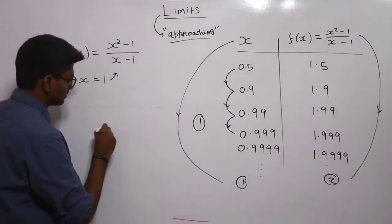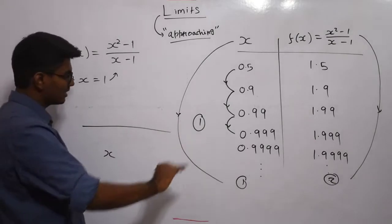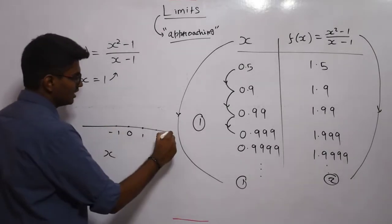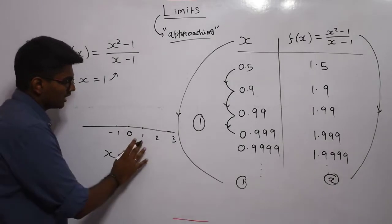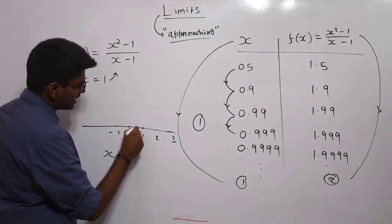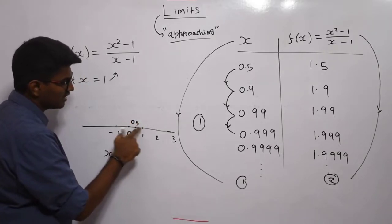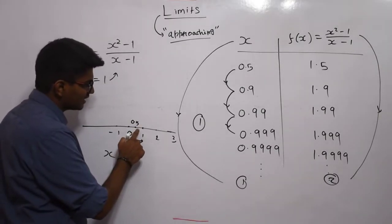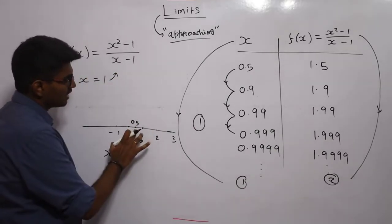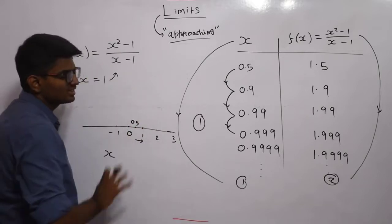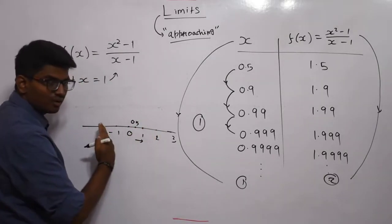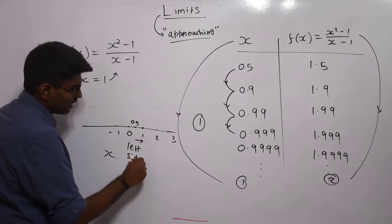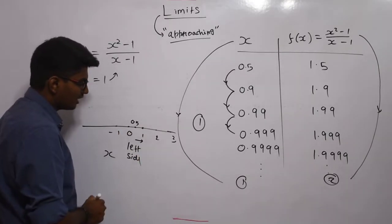Now, if I plot x on a number line with 0, 1, 2, minus 1, 3 — I am approaching from 0.5 to 1, so 0.5 is somewhere between 0 and 1. From 0.5 I keep on increasing the value towards 1, checking how f(x) changes. This is approaching from the left side of my x value. From the left side I am approaching 1. The same way, I could also approach from the right side.